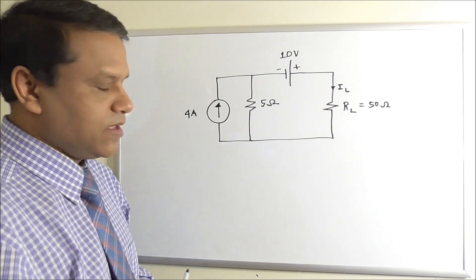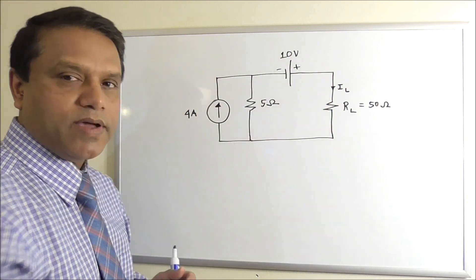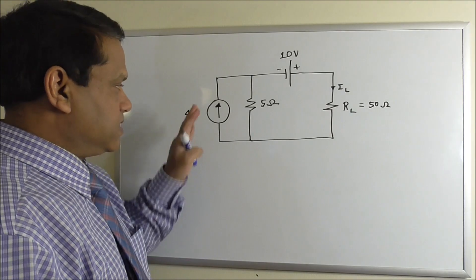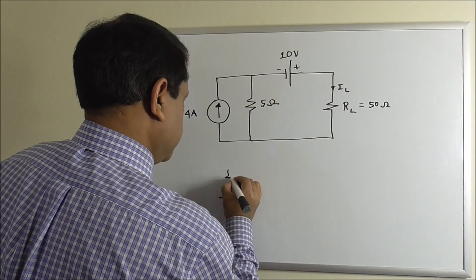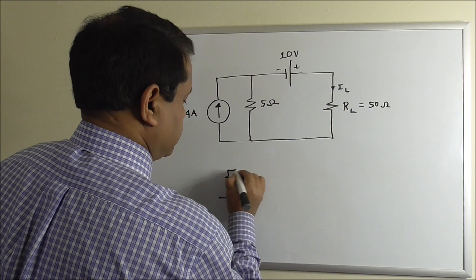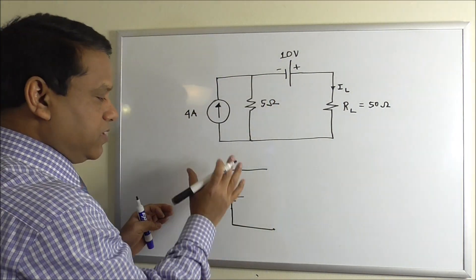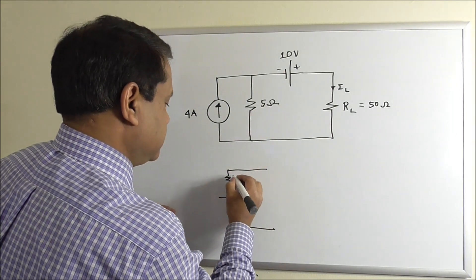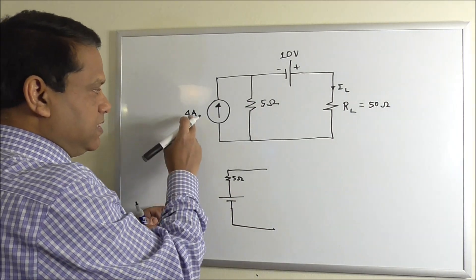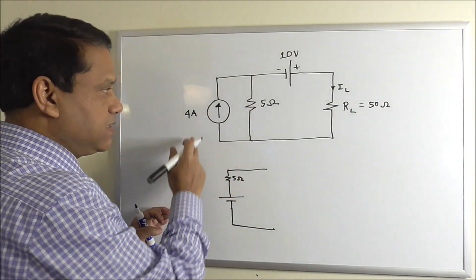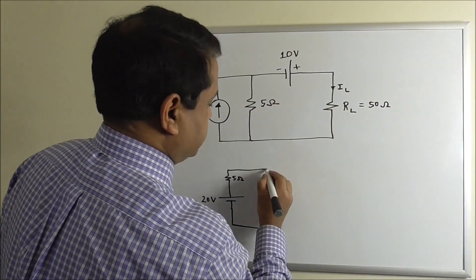In this case, if we convert the current source into a voltage source, the circuit becomes just one loop and is easy to solve. We convert this part: the resistance value remains the same at 5 ohms, and the voltage value becomes the current times the resistance — 4 times 5 equals 20 volts. The rest of the circuit remains the same.